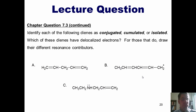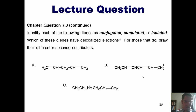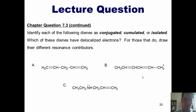This brings us to a final lecture question. I want you to identify each of the following dienes as conjugated, cumulated, or isolated. Which of these dienes have delocalized electrons? And for those that do, draw their different resonance contributors. I'm going to show you the answers momentarily, but if you wish, you can pause the video now and attempt to do them on your own.